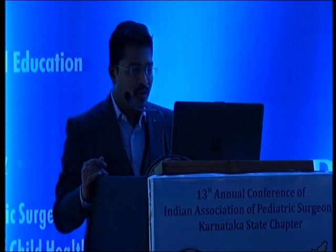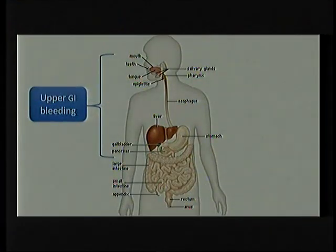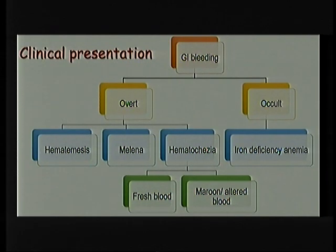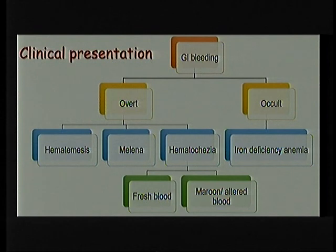We all know that upper GI bleeding is any lesion till the ligament of Treitz, and beyond that it's lower GI bleeding, which includes small bowel bleeding and colonic bleeds. Small bowel bleeds are the most difficult to manage. Going through a few terminologies: we have overt bleeds and occult bleeds. A child presenting with iron deficiency anemia with or without a positive occult blood test is considered as occult bleeding. Overt bleeding, depending on nature, may be hematemesis, melena, or hematochezia.